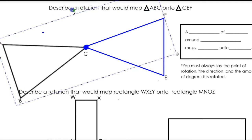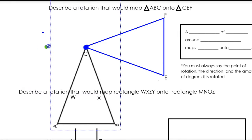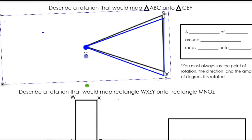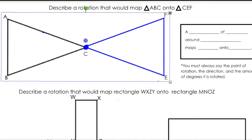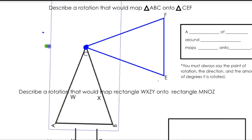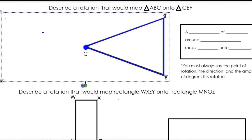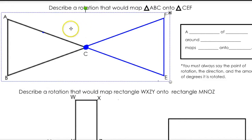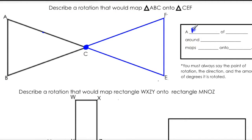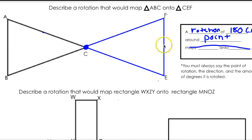Then we've got to figure out how much to rotate it. One turn is 90 — it's not there. Two turns is 180. We had to turn it two times. If you took your paper and rotated it once, that would be a 90-degree rotation. But we've got to do that twice, giving us a 180-degree rotation. So the way to map ABC onto CEF is a rotation of 180 degrees counterclockwise around point C.